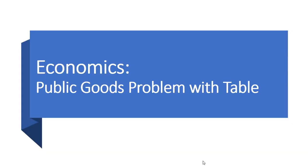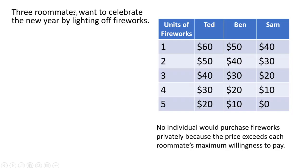Hello, in this video we're going to do an economics problem that involves public goods, and this problem we'll be using a table. We have three roommates who want to celebrate the new year by lighting off fireworks: Ted, Ben, and Sam. In this table here we have their maximum willingness to pay per unit of fireworks.